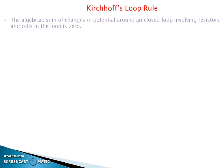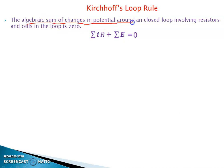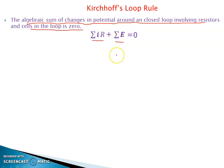The loop rule states that the algebraic sum of changes in potential around a closed loop involving resistances and cells is zero. We multiply current by resistance, take the algebraic sum, add the algebraic sum of EMFs, and the result is zero.